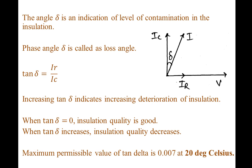The maximum permissible value of tan delta is 0.007 at 20 degrees Celsius.